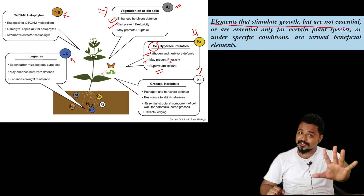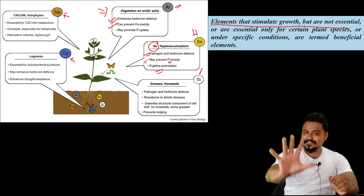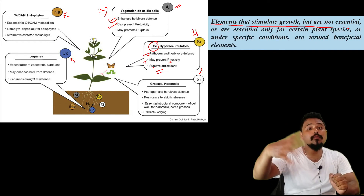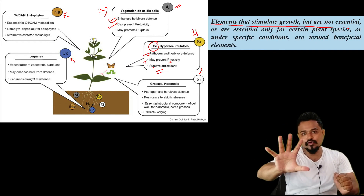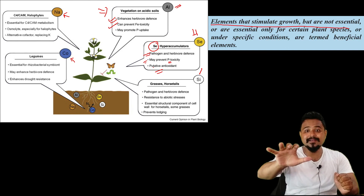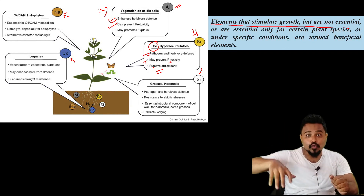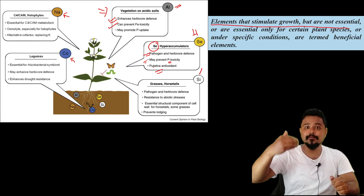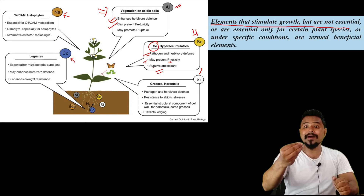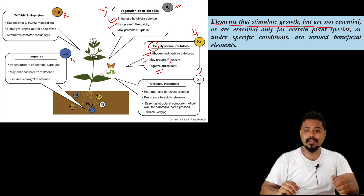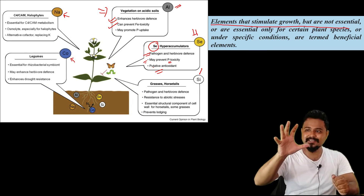Essential elements are those required for the complete life cycle of the plant. Beneficial elements are not required for the life cycle, but these elements are good for growth, development, and yield.